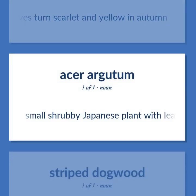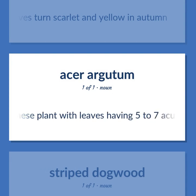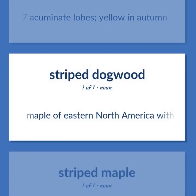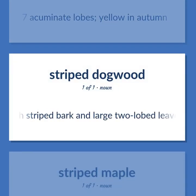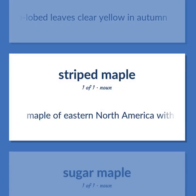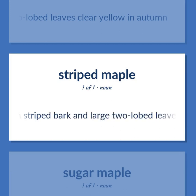Small shrubby Japanese plant with leaves having five to seven acuminate lobes, yellow in autumn. Maple of eastern North America with striped bark and large two-lobed leaves clear yellow in autumn.